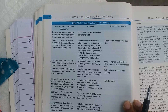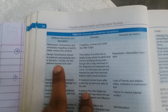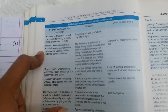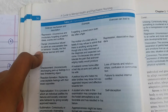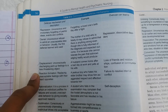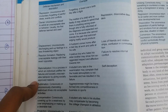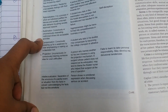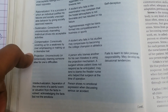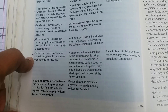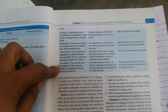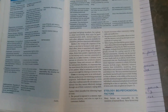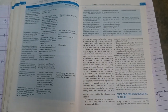Commonly used defense mechanisms include Repression, Denial, Displacement, Reaction Formation, Rationalization, Sublimation, Compensation, Projection, Intellectualization, Undoing, Regression, Dissociation, and Conversion. Stress etiology includes biological and psychosocial factors.